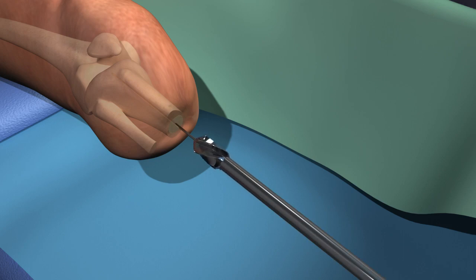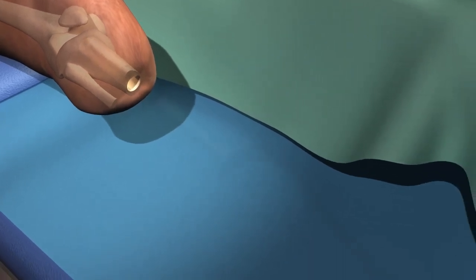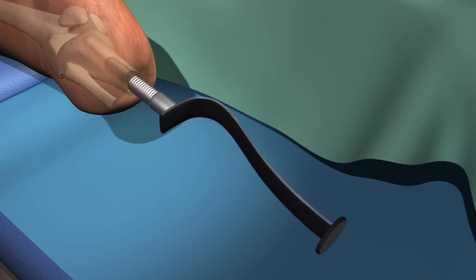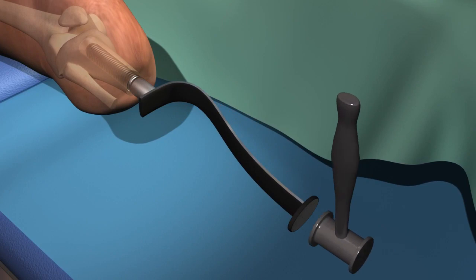The canal is prepared first with a drill and then with brooches. The implant is optimally sized so that there is immediate stability and fit.